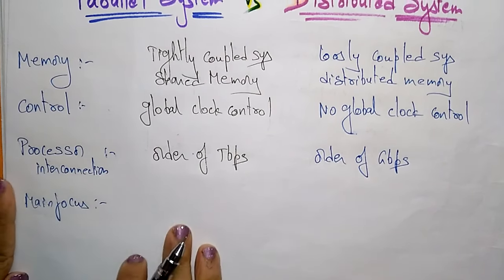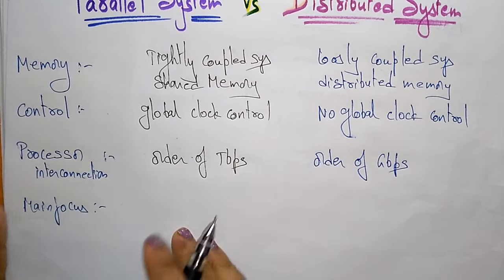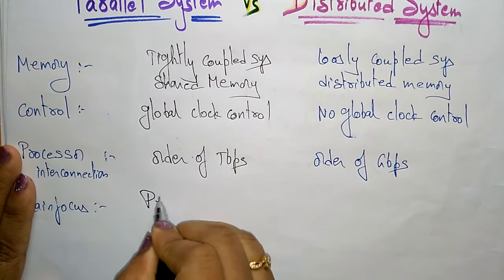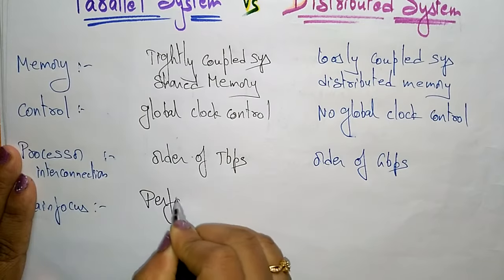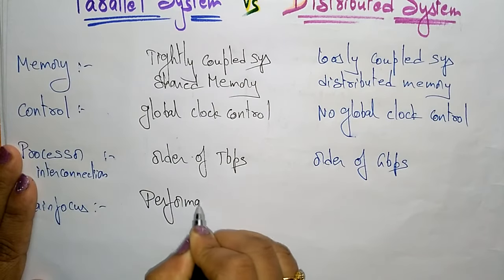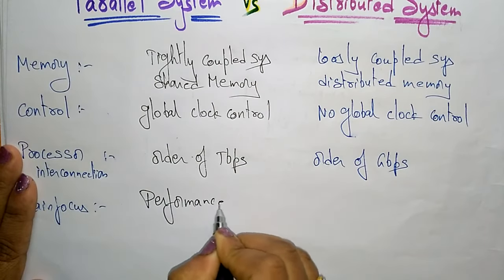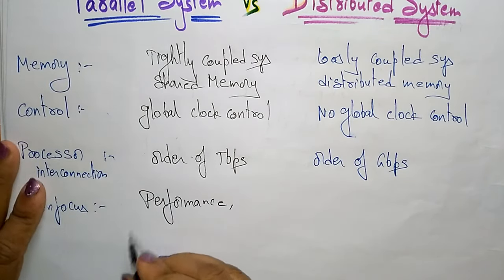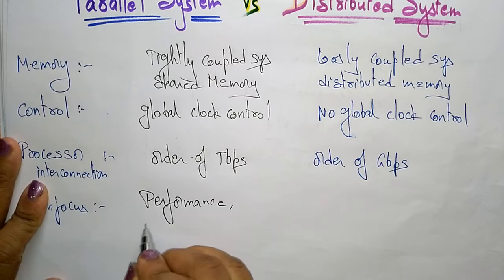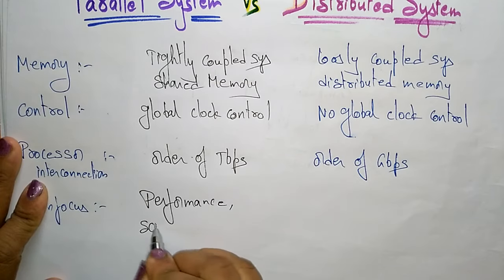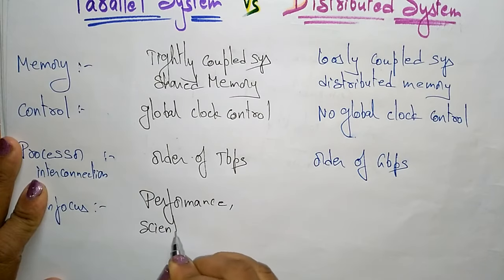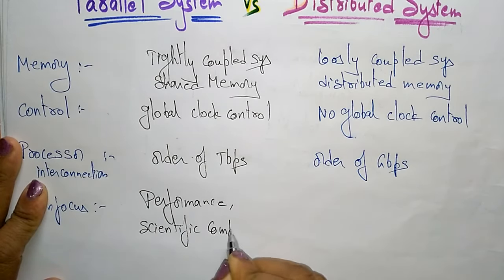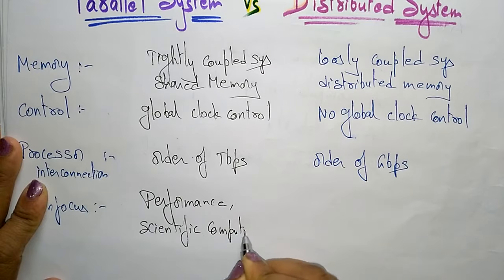What is the main focus of the parallel system? The parallel system's main focus is on performance of the system, and on scientific computing.